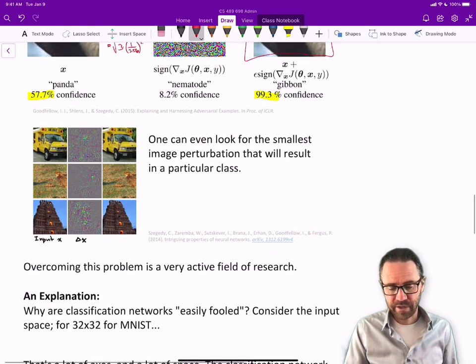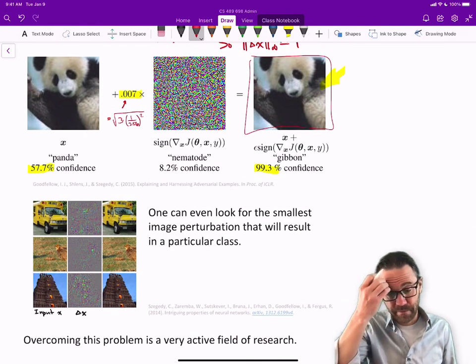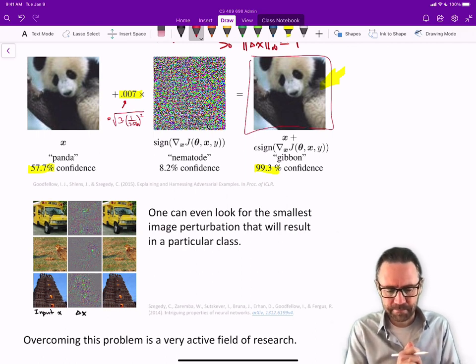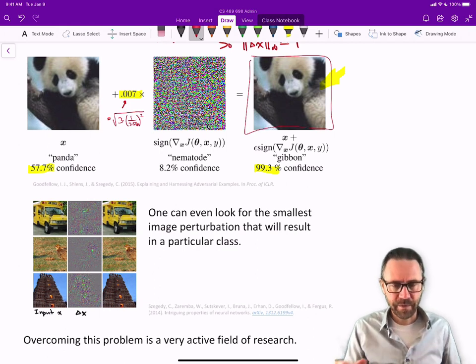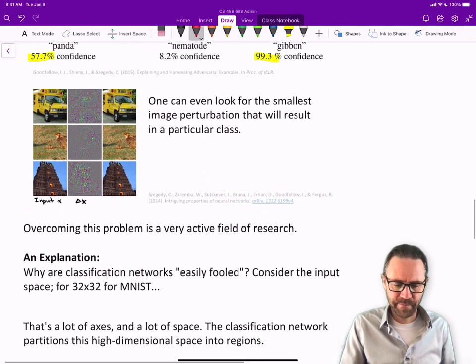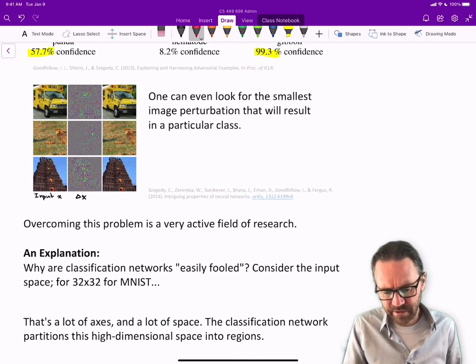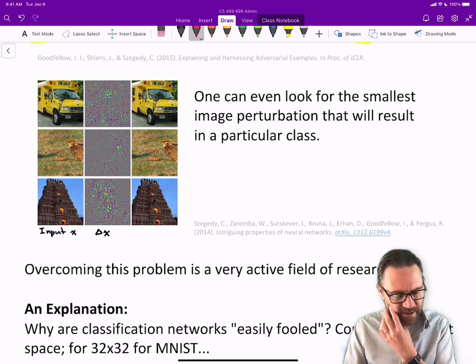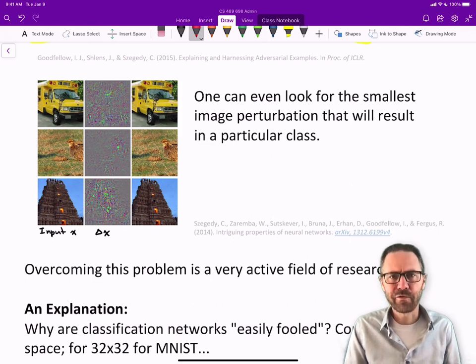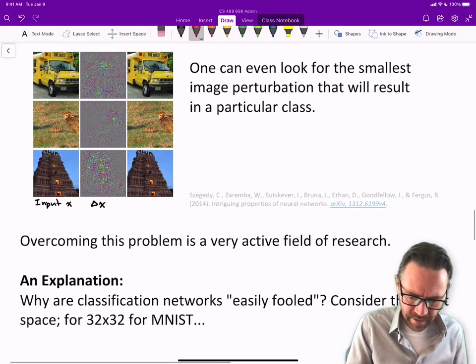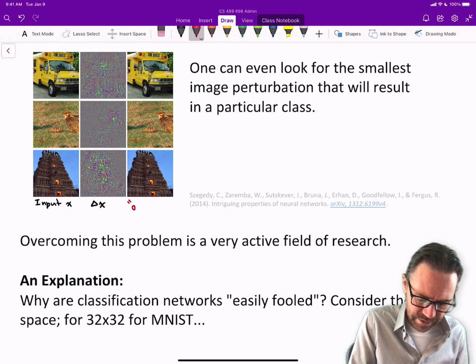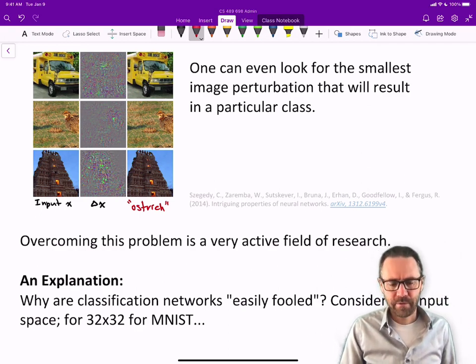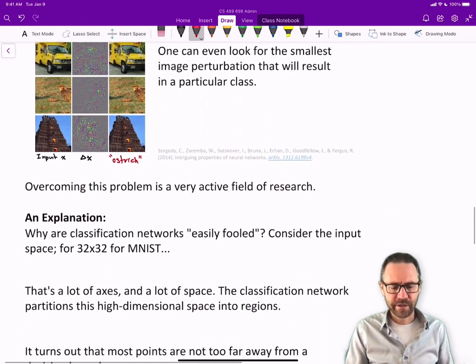One can even look for the smallest image perturbation. That one is basically finding an image exactly 0.007 away from our input and finding an adversarial example there. But you can say maybe we don't have to push that far. Maybe we can find an adversarial input that's even closer. Just a few examples. There's the input on the left, three different examples. Then there's the delta x, doesn't look like much. On the right is the perturbed image. In every case, the classifier thinks it's an ostrich.